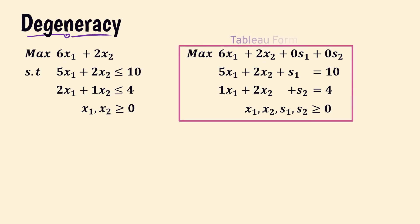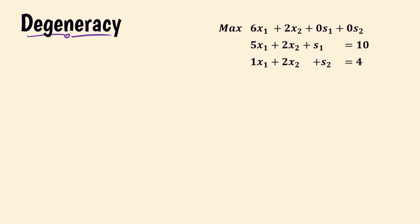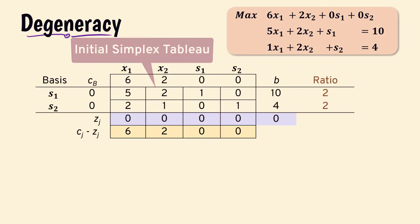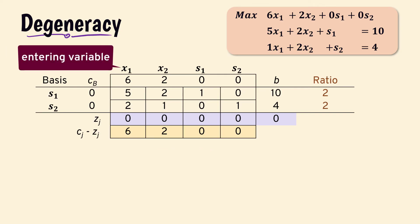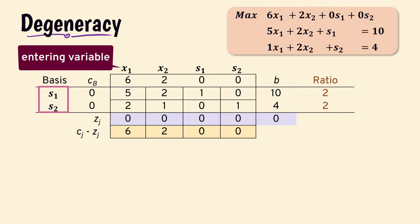Here is the tableau form with a slack variable added for each constraint, and here is the initial simplex tableau. Since 6 is the largest positive value in the net evaluation row, the entering variable is x1. The ratios, however, are tied at 2, meaning we can arbitrarily choose either s1 or s2 to leave the basis. This tie in the minimum ratios is an indication that we have degeneracy.